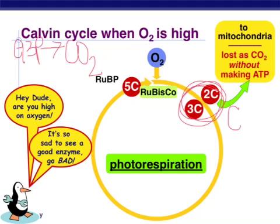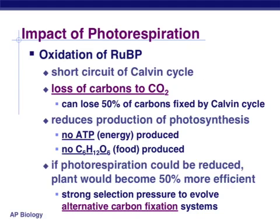What happens to what we've made? The three-carbon compound stays, but those two carbons get added to some of the oxygen within the leaf, and now we have carbon dioxide — not enough that rubisco is going to bind it, but we've just made carbon dioxide and haven't made any ATP. So we've gained nothing. The oxidation of RuBP ends up short-circuiting the Calvin cycle. We lose our carbons to carbon dioxide and don't make any energy from it. There's not really going to be any photosynthesis because we're not making any glucose. If we could reduce photorespiration — if we could cause oxygen not to even be involved with RuBP — then we could make that plant 50% more efficient.